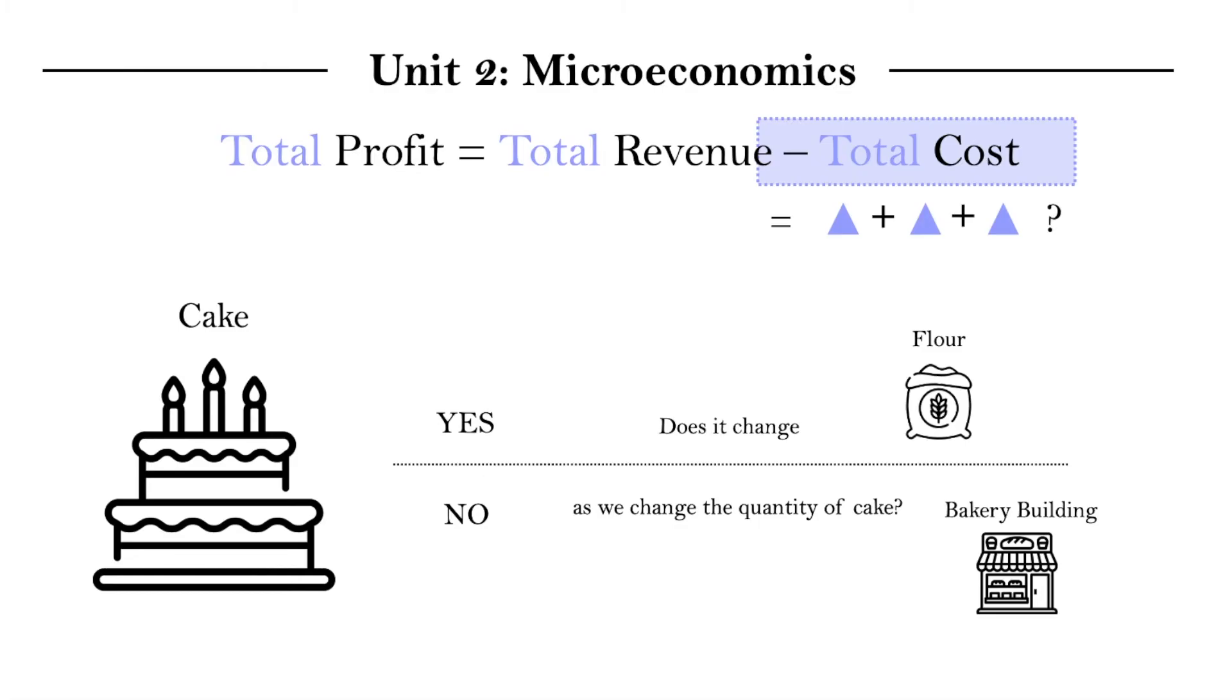So based on this one standard here, we can see that there are two types of costs. The first, which we call variable costs that change with the quantity of good we are making. And we have an example, flour, and also things like wage that you pay to workers, would also be a variable cost. To make more cakes, we need more bakers, and the wage you pay to your bakers would also increase.